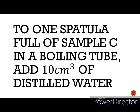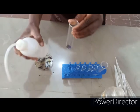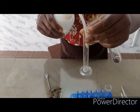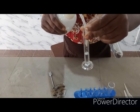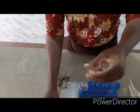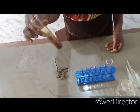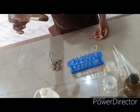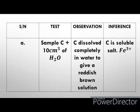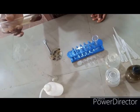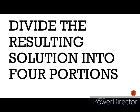Add one spatula full of the salt in a boiling tube. Add 10 cm cubed of water and shake thoroughly. As you are shaking the solution, you can notice that the salt is very soluble in water. The observation is that the salt dissolves in water to give a reddish brown solution. The inference is that the salt is a soluble salt and iron 3 plus is in solution.